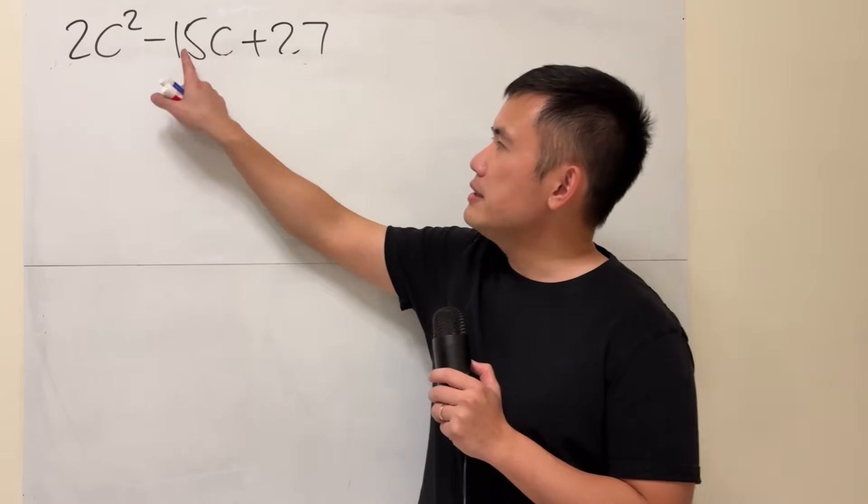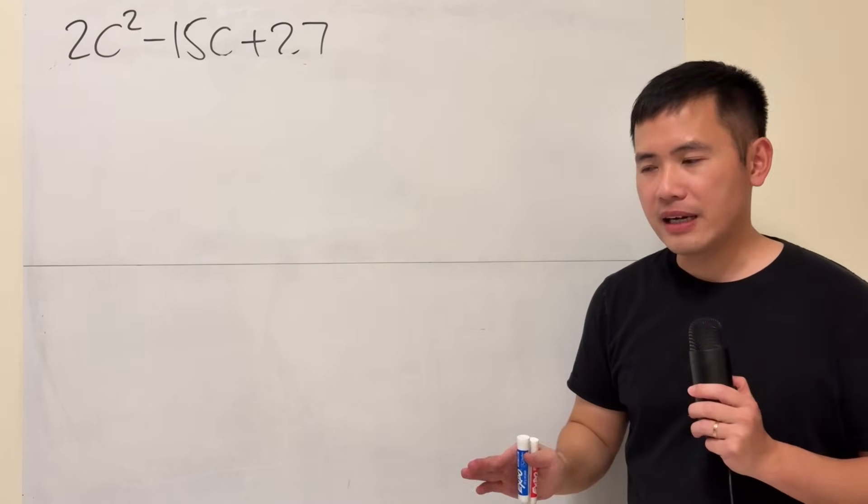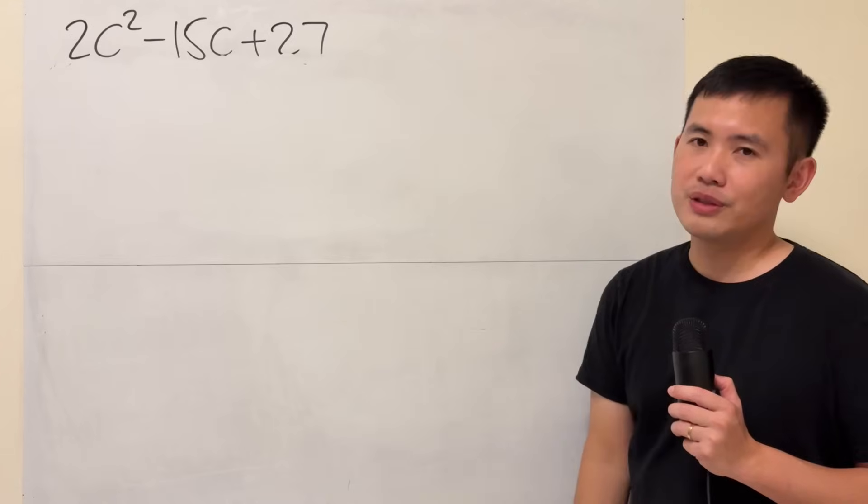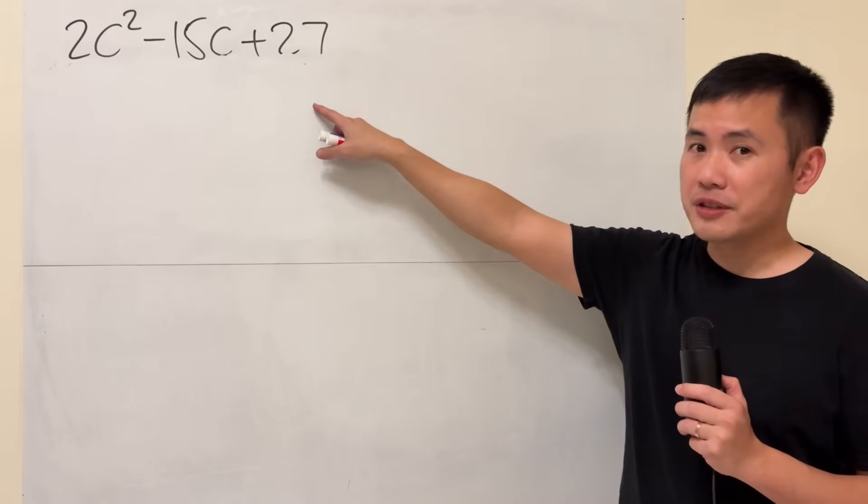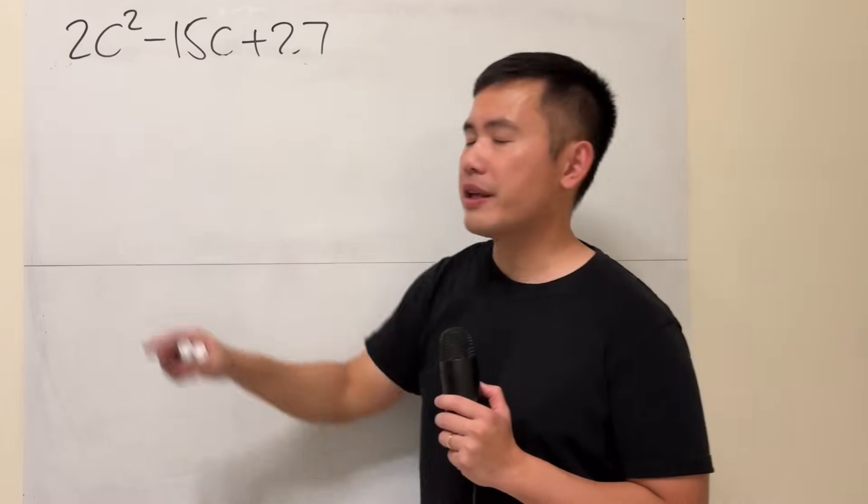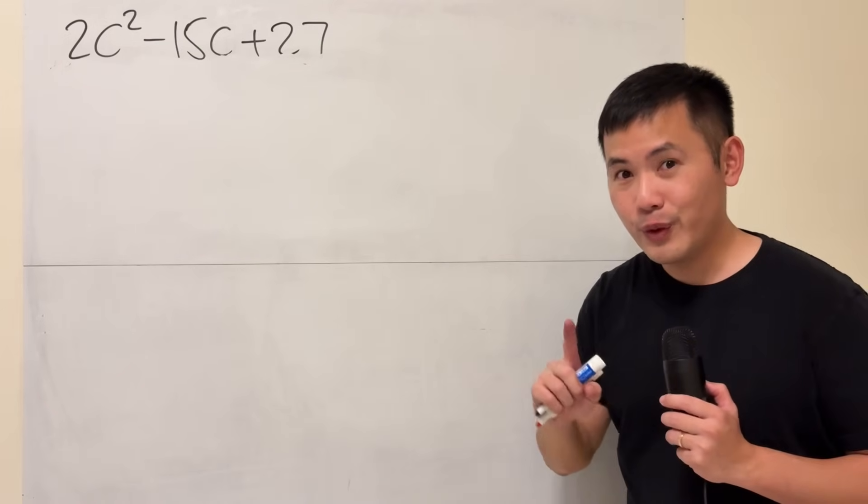First though, we have to make sure these numbers here, they do not have a common factor besides 1. They don't. So we can proceed. And the reason that factoring this trinomial is hard is because of the 2 right here, right?